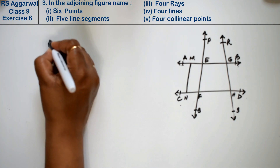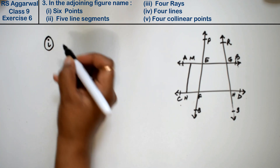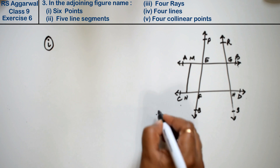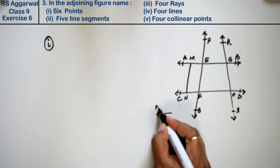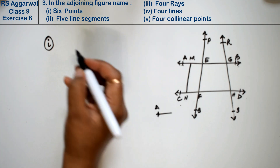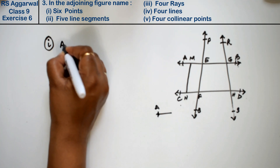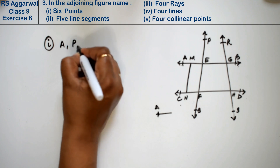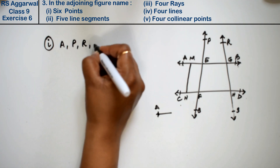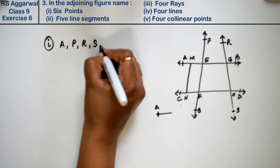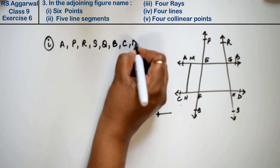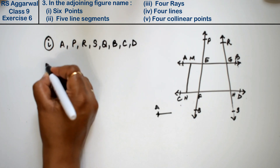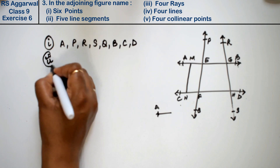First part: name 6 points. Points are dots or any labeled location on a line. So we can write: A, P, R, S, Q, B, C, D, and many more. All of these are points.